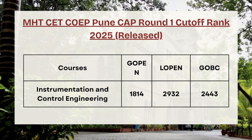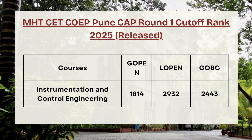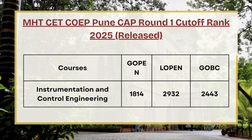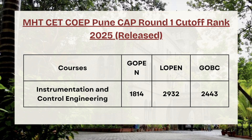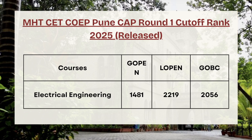Moving ahead, we have Instrumentation and Control Engineering. For G-Open the cutoff rank is 1814, for L-Open the cutoff rank is 2932, and for GOVC the cutoff rank is 2443.